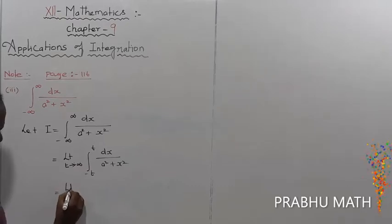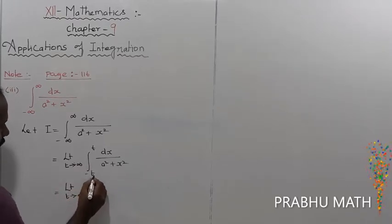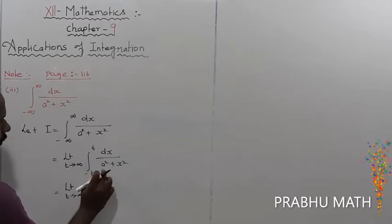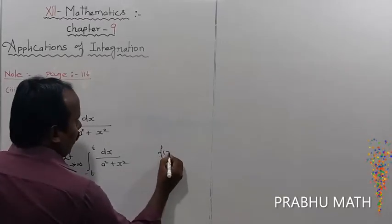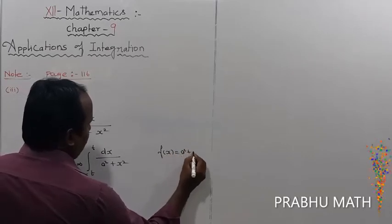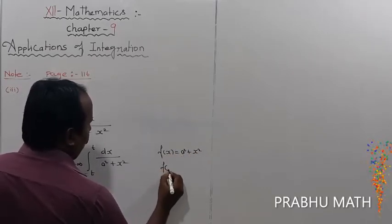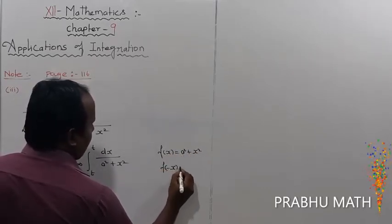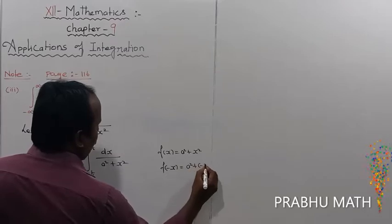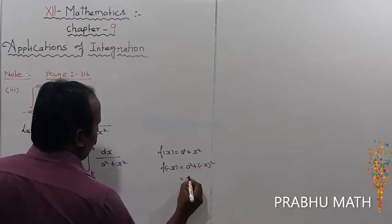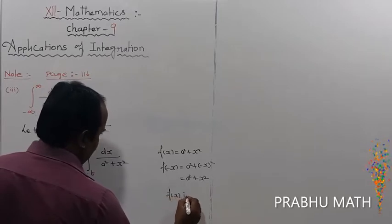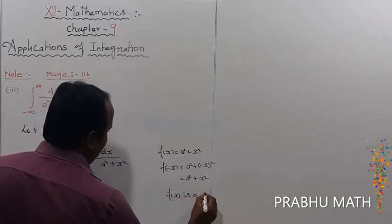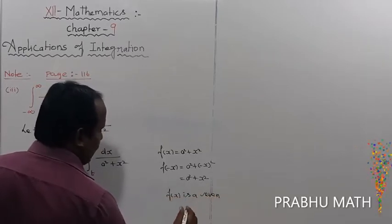So the limit as t tends to infinity — which function is this? That is f of x is equal to a squared plus x squared. Then f of minus x is equal to a squared plus minus x squared, which is equal to a squared plus x squared. Therefore f of x is an even function.